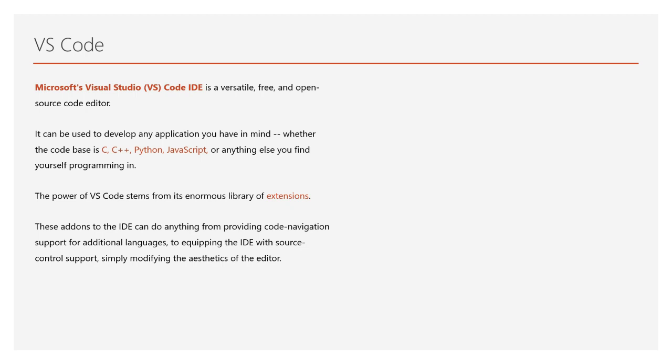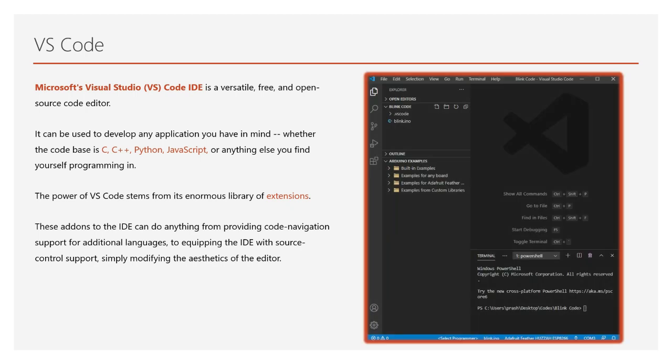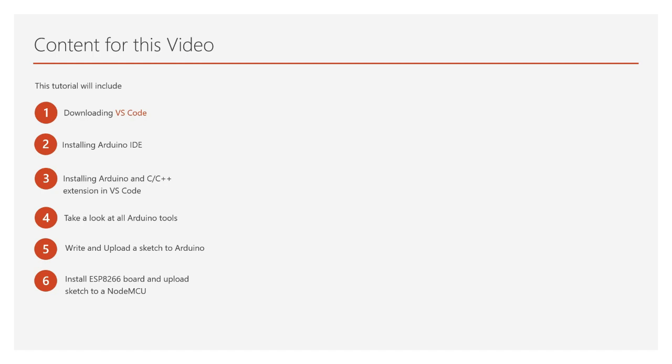To meet the above demands, we are going to use VS Code. Microsoft's Visual Studio Code is a versatile, free, and open source code editor. It can be used to develop any application you have in mind, whether the code base is C, C++, Python, JavaScript, or anything else. The power of VS Code stems from its enormous library of extensions — these add-ons can do anything from providing code navigation support for additional languages to equipping the IDE with source control support, or simply modifying the aesthetics of the editor. This tutorial will demonstrate how to use VS Code to build and program an Arduino, all without ever opening your Arduino IDE.